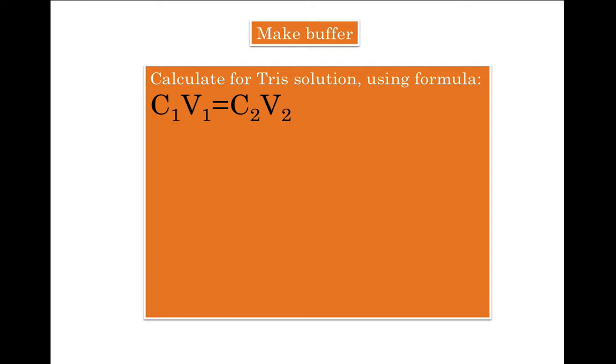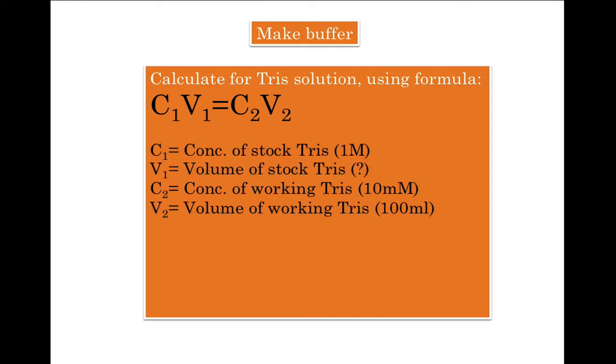Let's dilute 1 molar Tris solution to make 10 millimolar Tris. So we will use the formula C1V1 equals C2V2, where C1 is the concentration of stock Tris which is 1 molar. Volume V1 is the volume of stock Tris, that is the amount of 1 molar Tris that you are going to take and dilute to make 10 millimolar Tris. C2 is concentration of working Tris which is 10 millimolar, and V2 is volume of working Tris which is 100 ml.